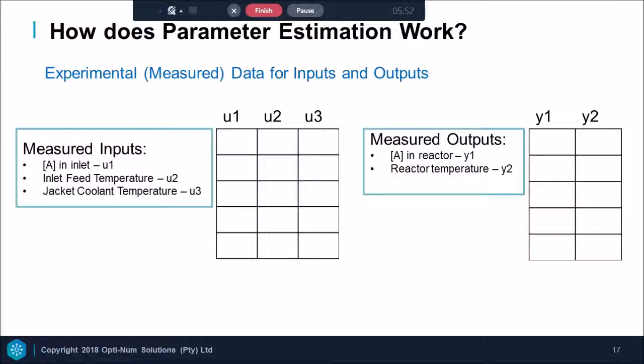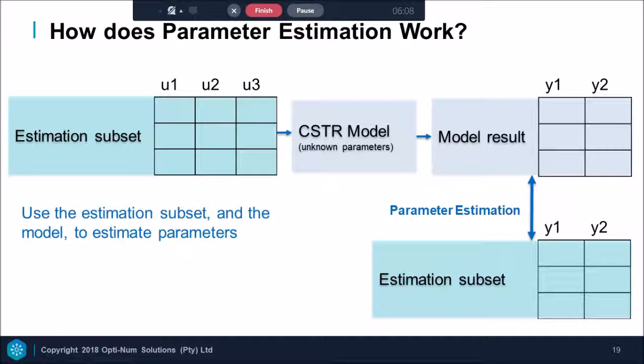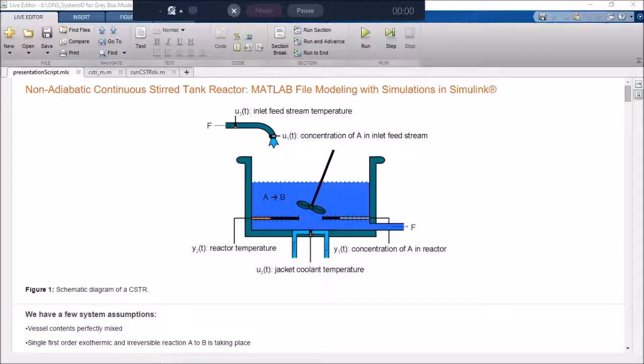So how does parameter estimation work? How are we going to adjust our temperature dependent parameters dynamically? We have measured inputs and outputs. We slice our data set into an estimation subset and a validation subset. We use the estimation subset and model to find accurate parameters. Then we validate them. I'm now going to briefly do parameter estimation in MATLAB.